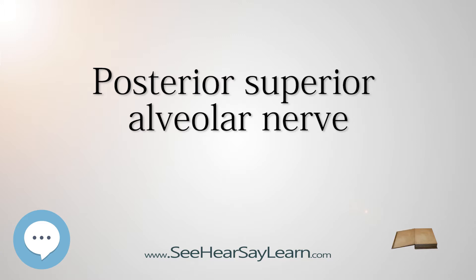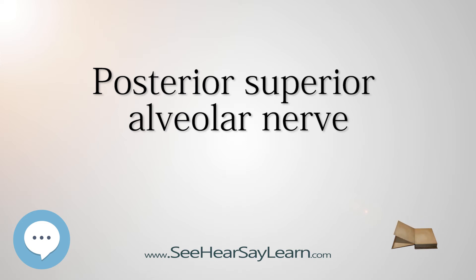The posterior superior alveolar nerve innervates the second and third maxillary molars, and two of the three roots of the maxillary first molar — all but the mesiobuccal root. When giving a posterior superior alveolar nerve block, it will anesthetize the mesial buccal root of the maxillary first molar approximately 72% of the time.